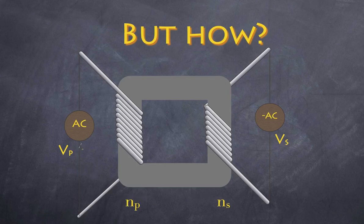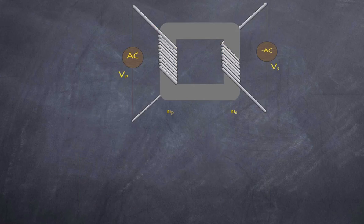The coils have different numbers of turns. I've introduced some variables: Vp and Np refer to the primary coil — our source — so Vp is the primary voltage and Np is the number of turns in the primary coil. On the other side, we have our secondary voltage Vs and the secondary number of turns Ns. It is this variation in turns that determines whether we get an increase or decrease in voltage.